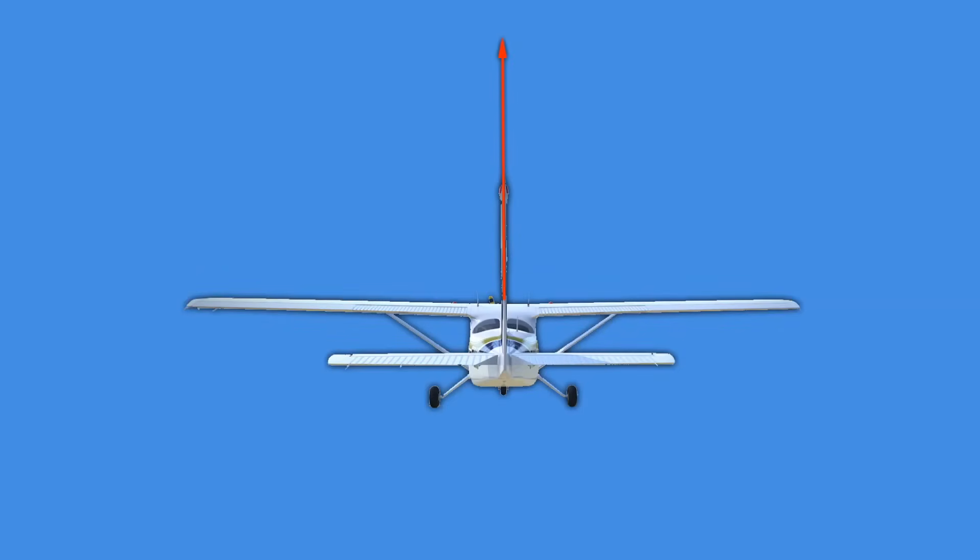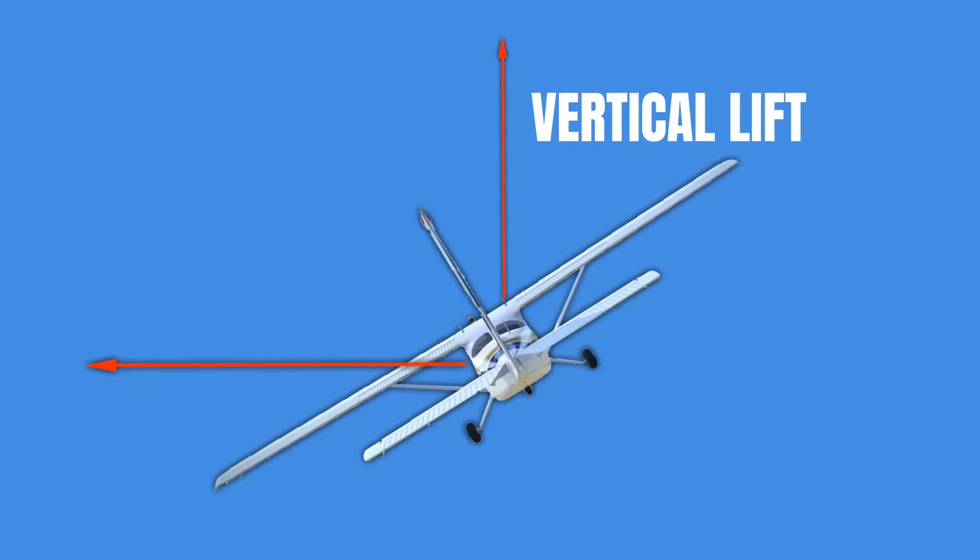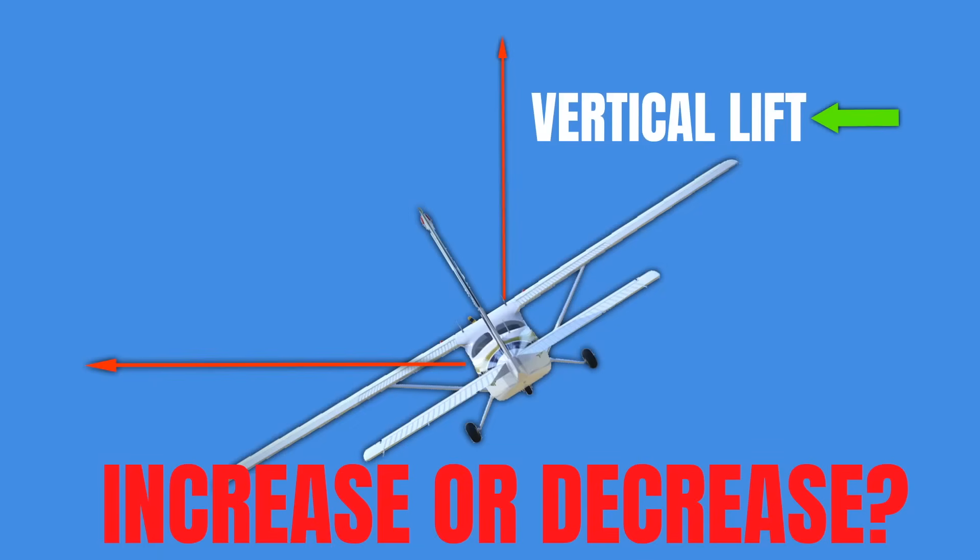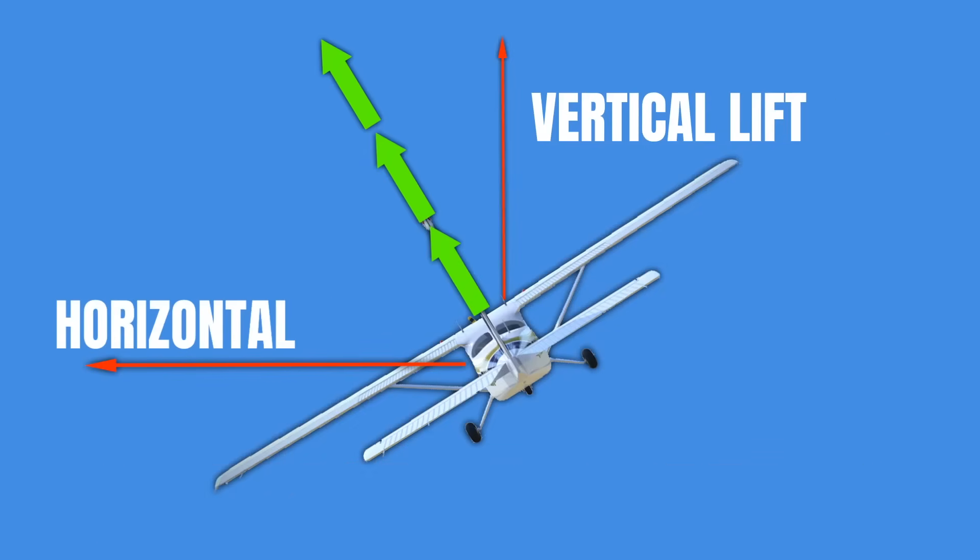But now I want you to think about something. What do you think will happen to our vertical lift if we trade some of it for horizontal lift by rolling the airplane? Will this vertical lift increase or decrease? Well we took some of it to turn it into horizontal lift so that vertical lift will decrease won't it? So if we want to keep our aircraft from descending we need to do something. We need to increase the lift that our wings are producing. And remember we've got two tools we can use to do that. We can either increase our airspeed or we can increase our angle of attack by pulling back on the yoke.